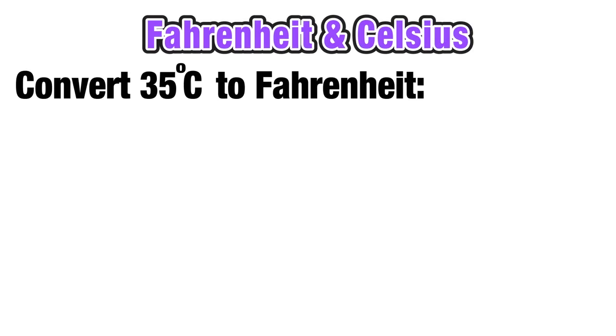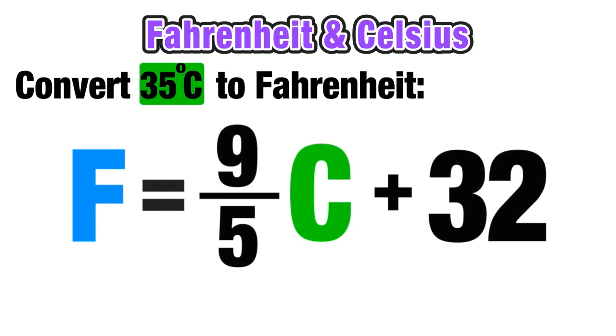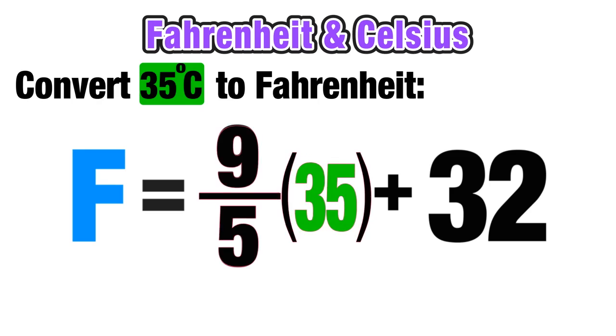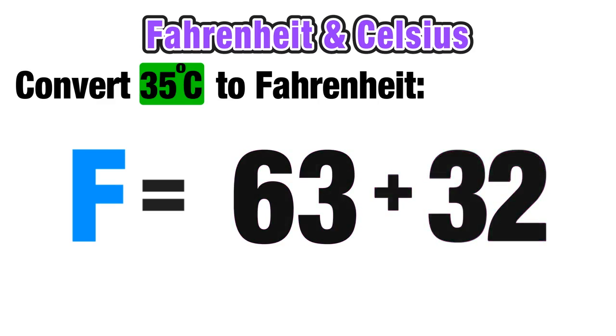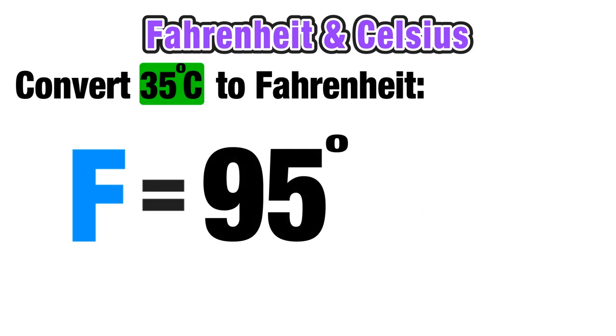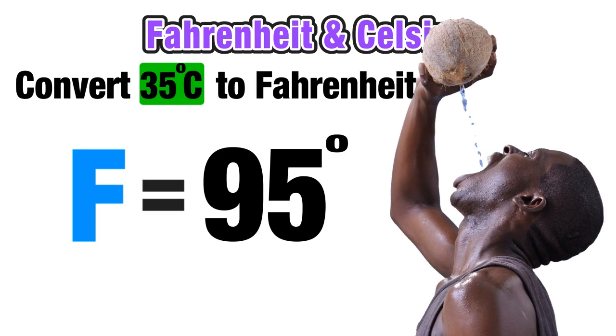For our first example, we want to convert 35 degrees Celsius to degrees Fahrenheit. We'll use the Fahrenheit formula, substituting 35 for C. 9 over 5 times 35 equals 63, and then 63 plus 32 equals 95 degrees Fahrenheit. If you're used to the Fahrenheit scale, you might think 35 degrees represents a very cold temperature, but in reality, in degrees Fahrenheit it is a very warm temperature.